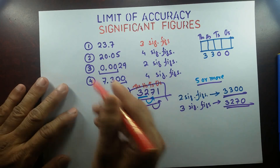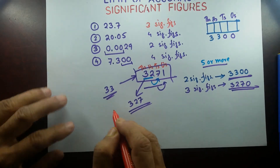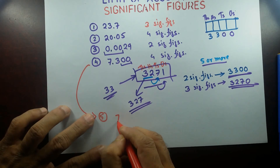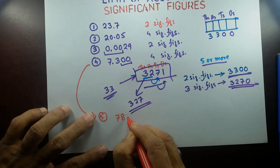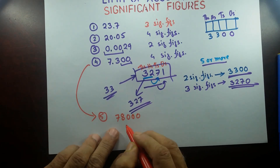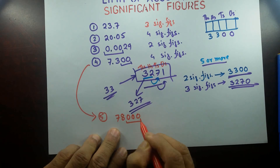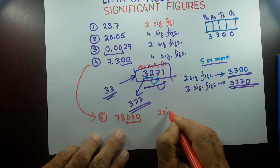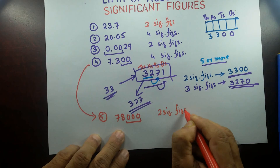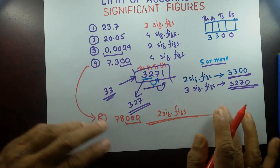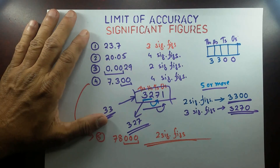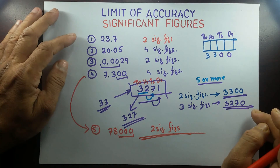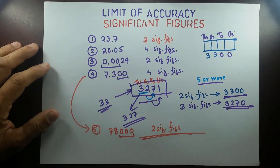Number five: if we have 78,000, all the trailing zeros here are non-significant. So this is two significant figures. I hope you understand that. If you have any questions, leave them in the comment box and I'll get back to you. Thank you, and have a good day.